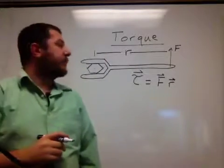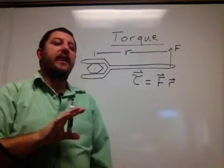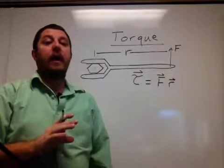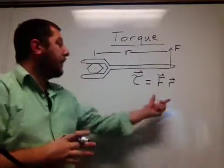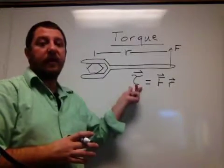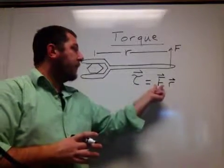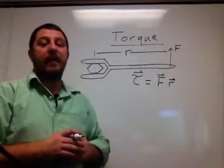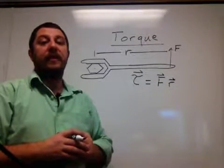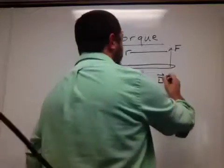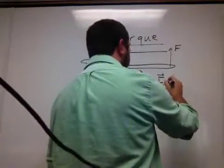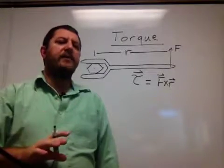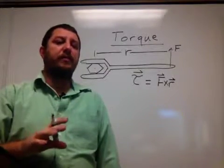Since these are vectors, you might ask: is this a dot product? It cannot be a dot product, because a vector dotted into another vector gives a scalar, and torque is itself a vector. Therefore, it must be the cross product. In the next video we'll talk about exactly what the cross product is and means.